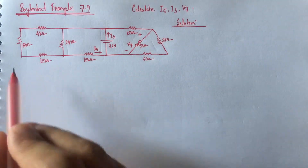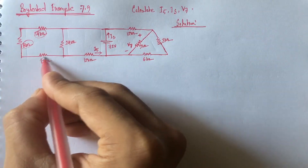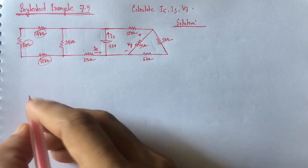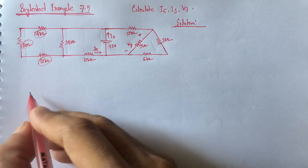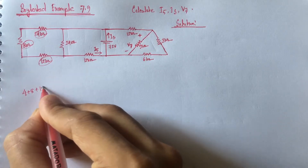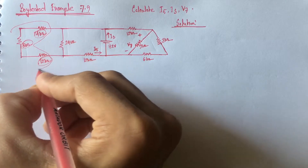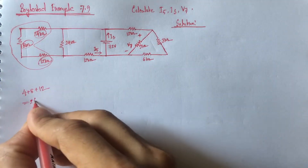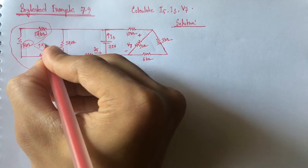From this circuit we see that the 4 Kiloohm, 8 Kiloohm, and 12 Kiloohm resistances are in series. If we take the equivalent of these 3 resistances, they will be added directly. So this part can be replaced by an equivalent resistance of 24 Kiloohm.